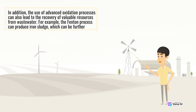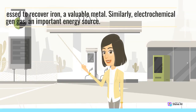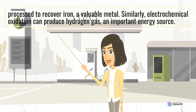In addition, the use of advanced oxidation processes can also lead to the recovery of valuable resources from wastewater. For example, the Fenton process can produce iron sludge, which can be further processed to recover iron, a valuable metal. Similarly, electrochemical oxidation can produce hydrogen gas, an important energy source.